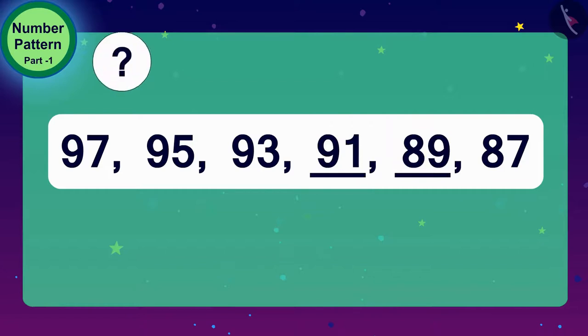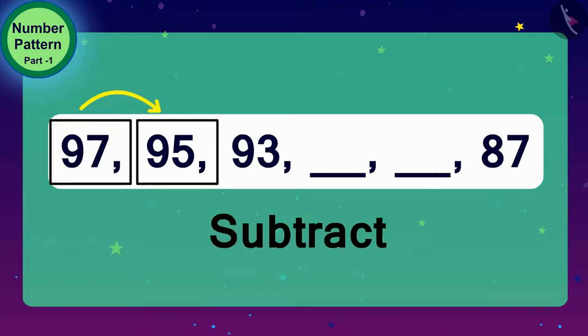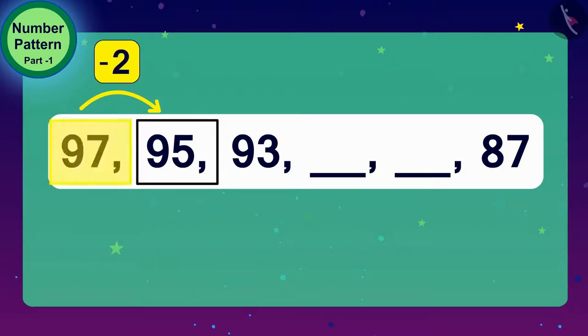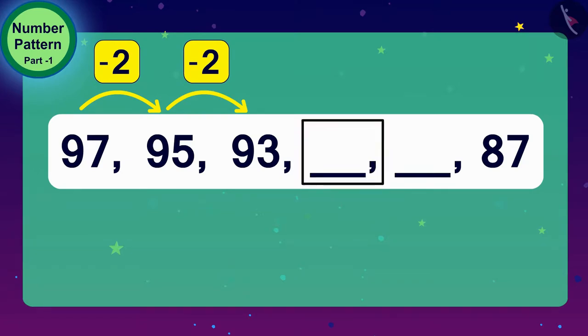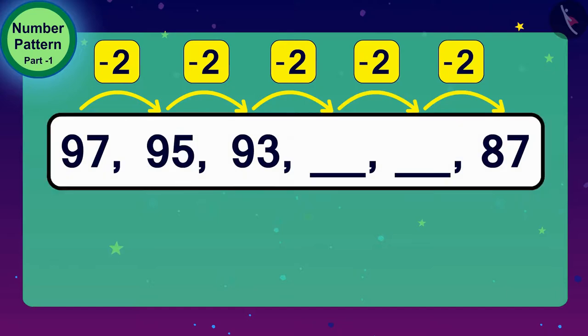What do we have to do to get the 95 from 97 here? Yes, we have to subtract 2 from 97. And what do we have to do to get 93 from 95? Exactly. Once again, subtract 2. So, to get the next number in this number pattern, we need to subtract 2 from the number before it. Here is the rule of this number pattern.